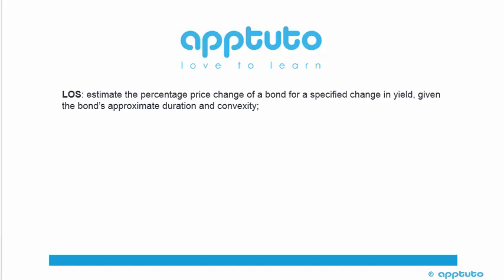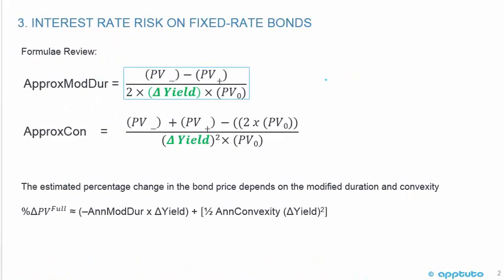This LOS is to estimate the percentage price change of a bond for a specified change in yield, given the bond's approximate duration and convexity. Quick formula review: the approximate modified duration uses the price when rates drop minus the price when rates increase, divided by 2 times the change in yield times the original price. The approximate convexity uses the price when rates drop plus the price when rates increase minus 2 times the original price, divided by the change in yield squared times the original price.